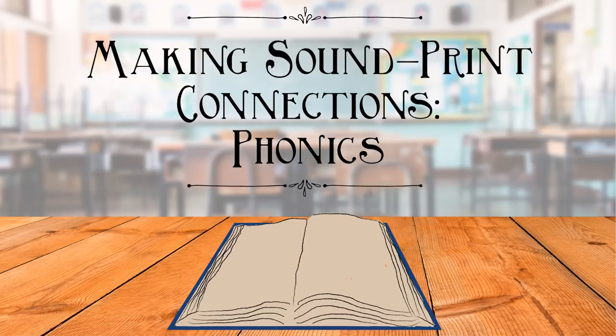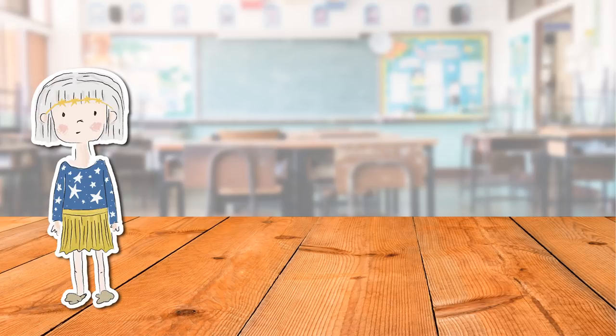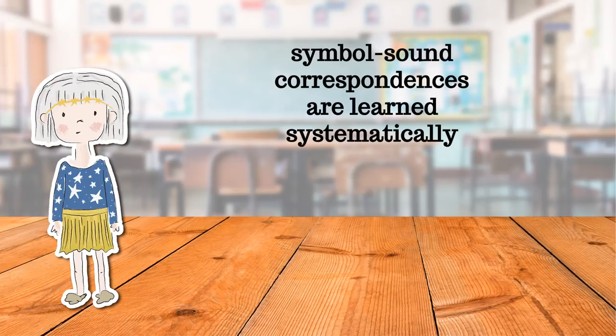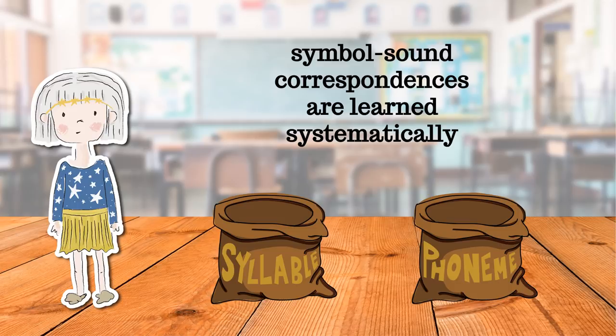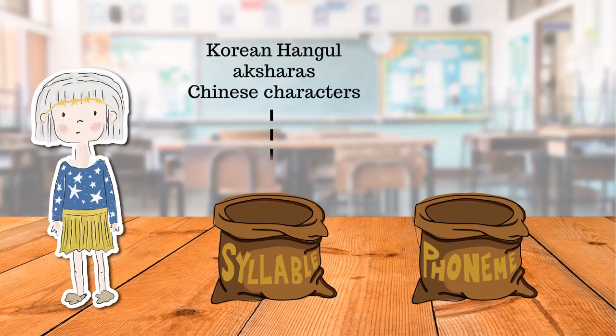Making sound-print connections: phonics. Phonics basically means that the symbol-sound correspondences are learned systematically. This could be at the syllable or phoneme level. Korean Hangul, aksharas, and Chinese characters are probably all learned more at the syllable than the phoneme level.